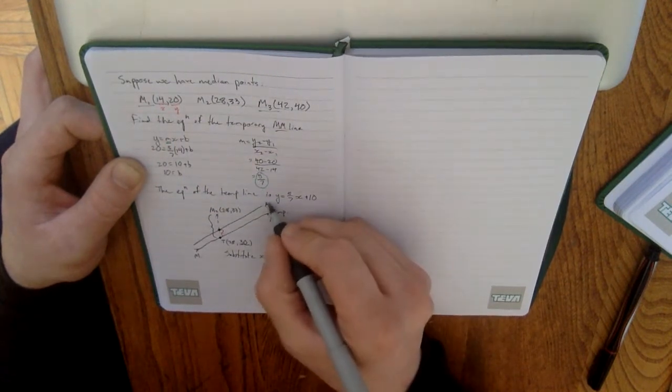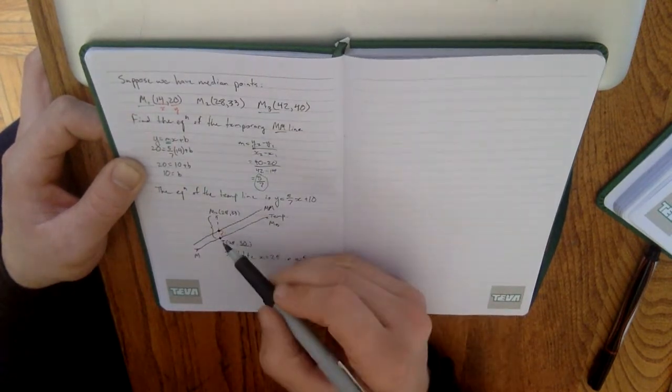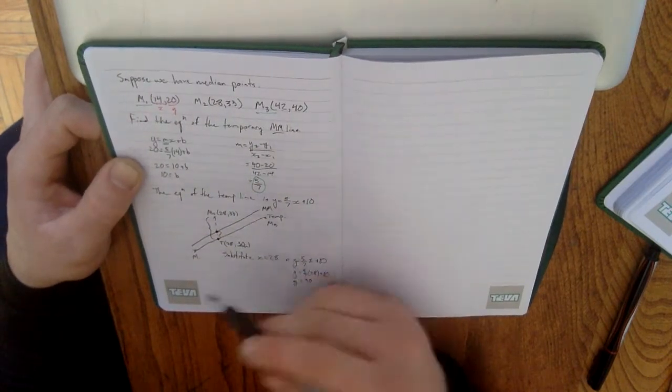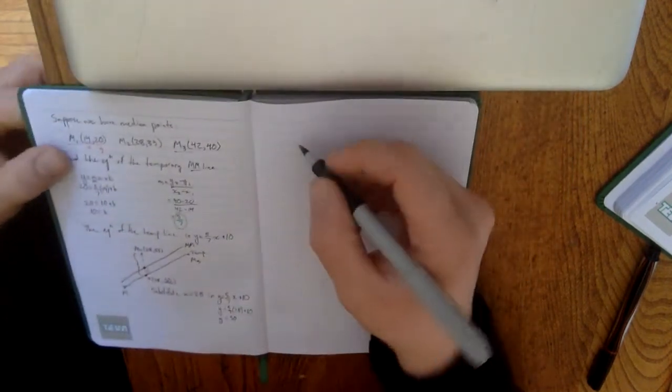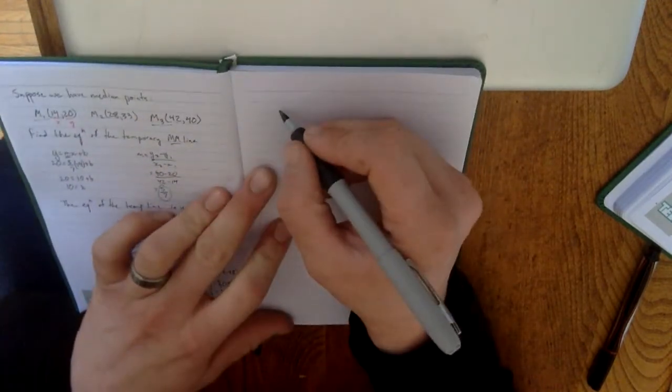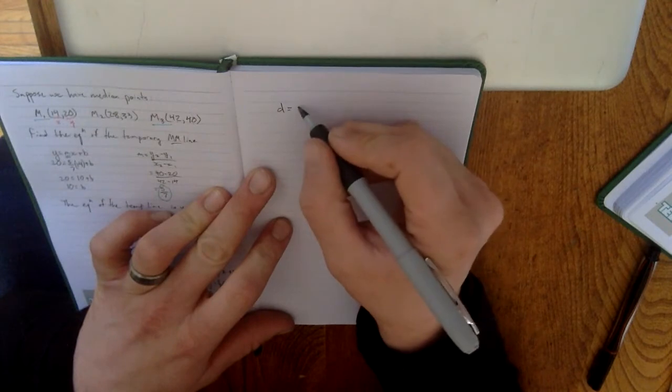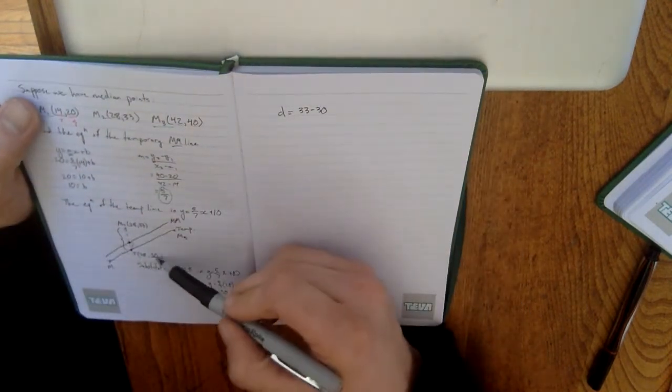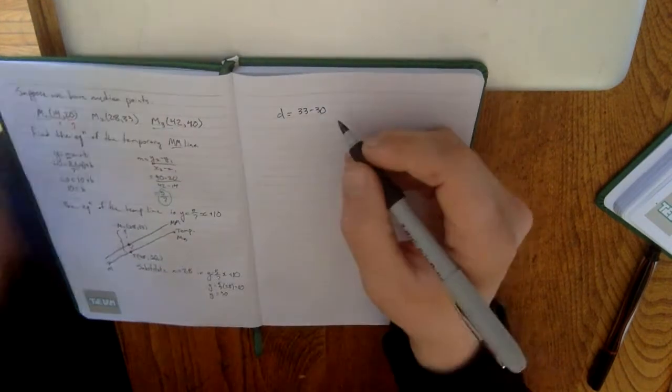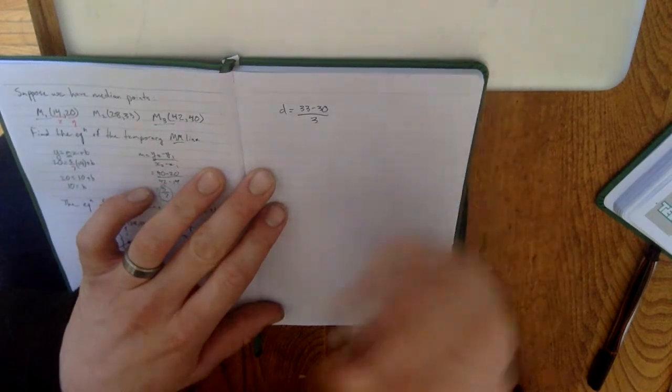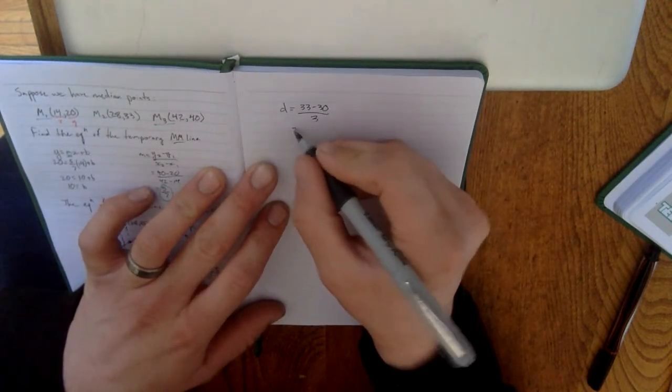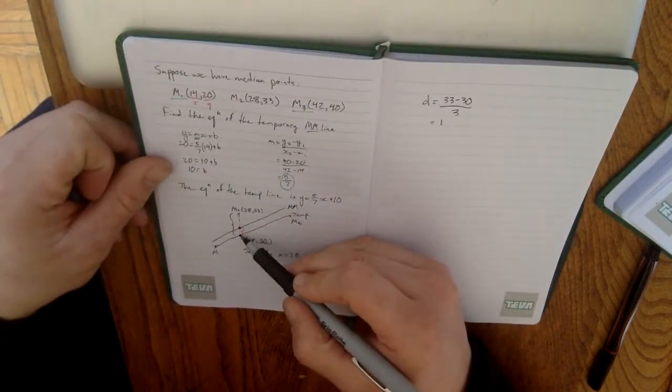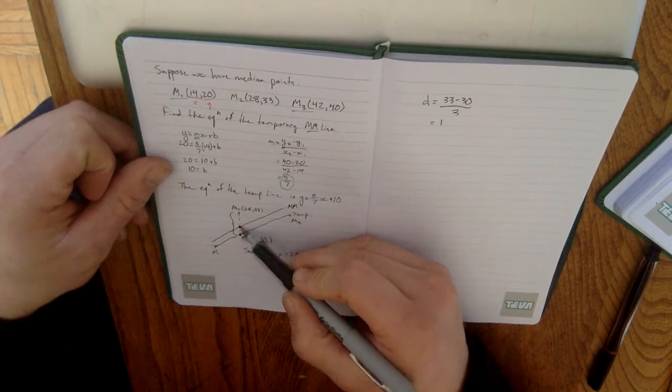We need to find the actual median-median line. So, we need a third of the distance between 30 and 33. Now, that will be easy to find. What we have to do to find that is we take our total distance, which is 33 minus 30. That's the difference in our y-coordinates of our two points. And we'll divide that by 3 because we're looking for one-third of the distance. So, this is pretty easy to solve. It gives me a value of 1.